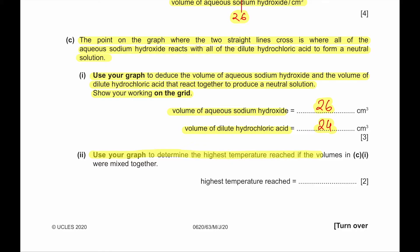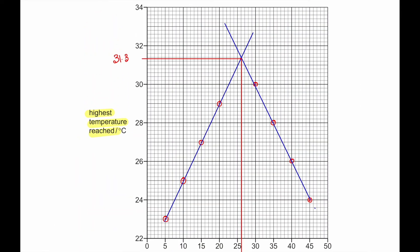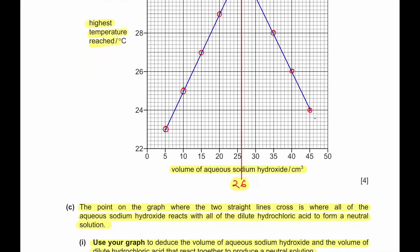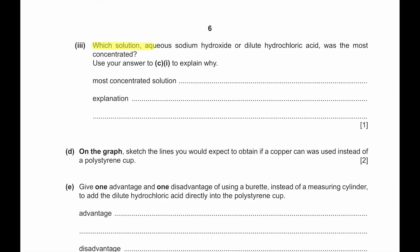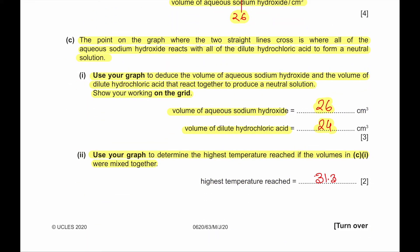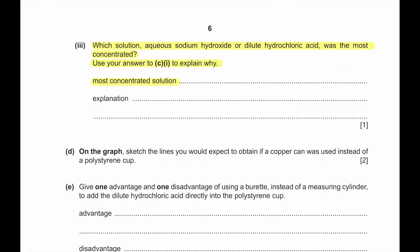Use your graph to determine the highest temperature reached if the volumes in C1 were mixed together. The highest temperature reached would be 31.3°C. Part 3: which solution was the most concentrated? The most concentrated one will have a lower volume. The volume of dilute hydrochloric acid is lower at 24 cm³, so dilute hydrochloric acid was the most concentrated.